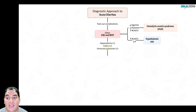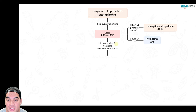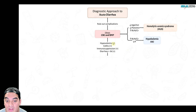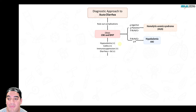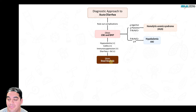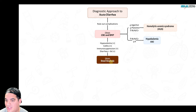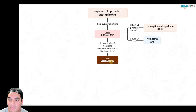Those high-risk scenarios requiring stool analysis include: severe hypovolemia, signs of colitis — elevated WBCs and fever with diarrhea on imaging, any immunosuppressed state such as HIV or post-transplant on immunosuppressants, or persistent diarrhea for more than three days with worsening symptoms.